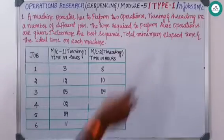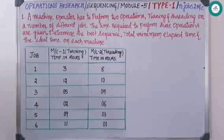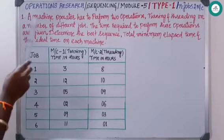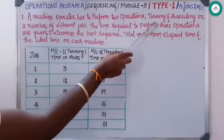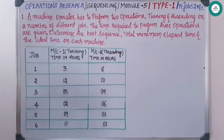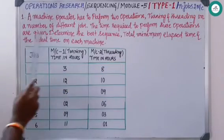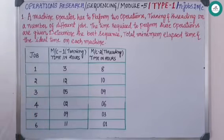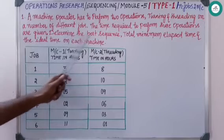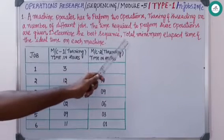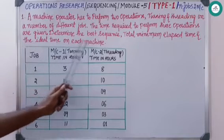Coming to the first type — n jobs on two machines — the first problem: a machine operator has to perform two operations, turning and threading, on a number of different jobs. The time required to perform these operations is given in the table. Determine the best sequence, total minimum elapsed time, and the idle time on each machine.